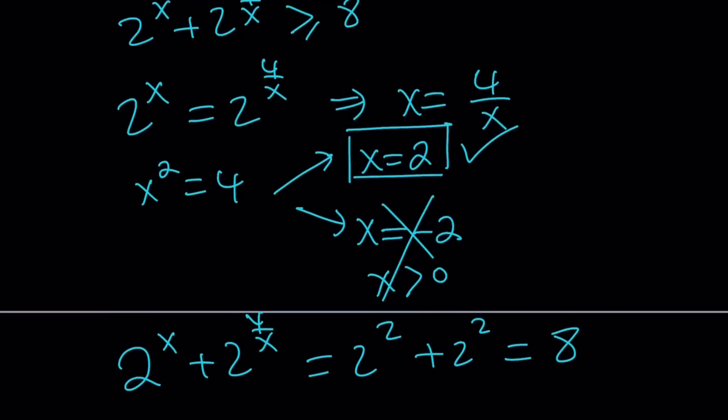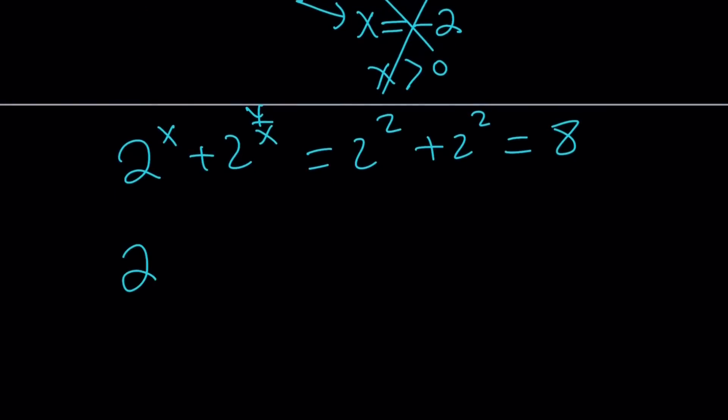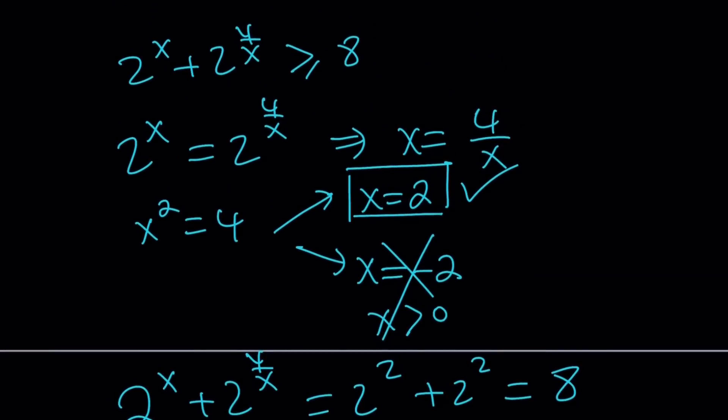But what about x equals negative 2? If you replace x with negative 2, 2 to the negative 2 plus 2 to the negative 2 is going to be 1 fourth plus 1 fourth, which is 1 half. Unfortunately, negative 2 does not satisfy. And we kind of verified it with the AM-GM. It just didn't come up.